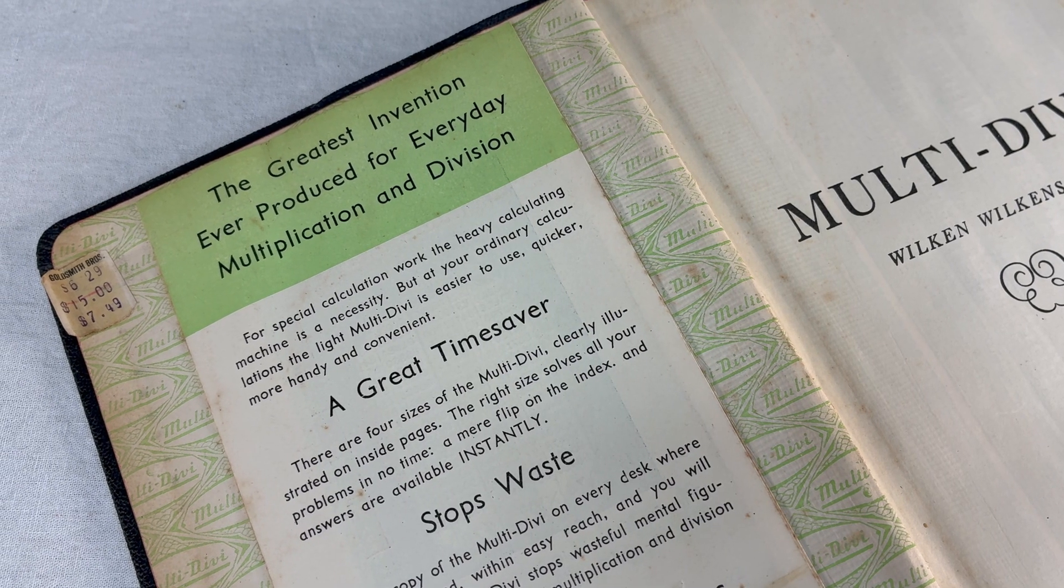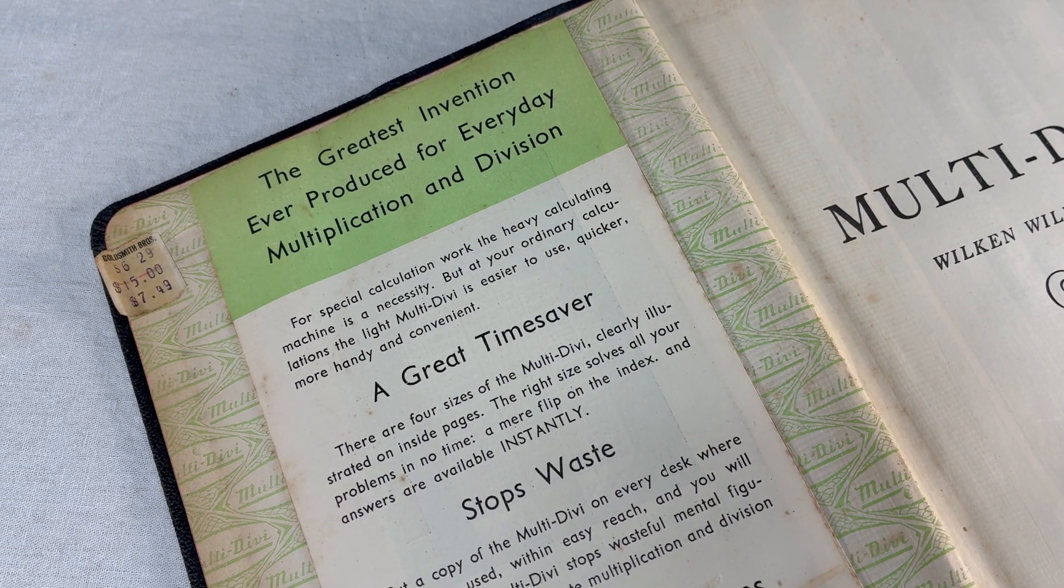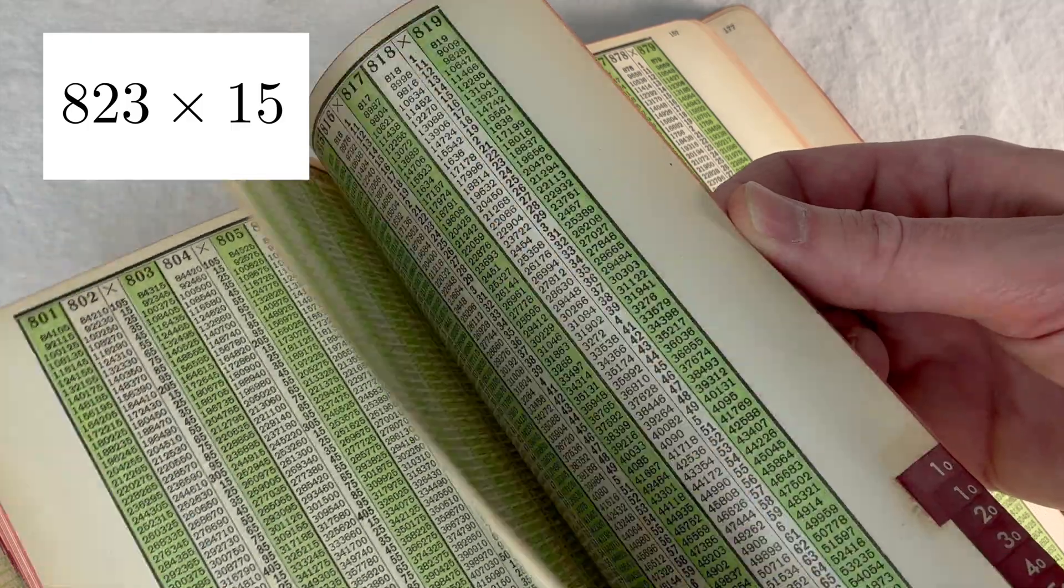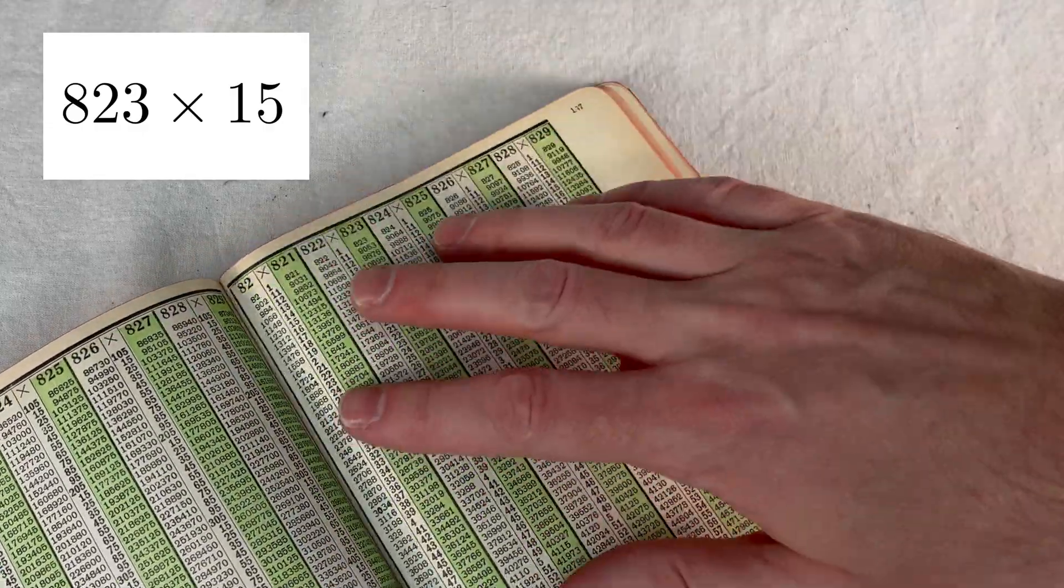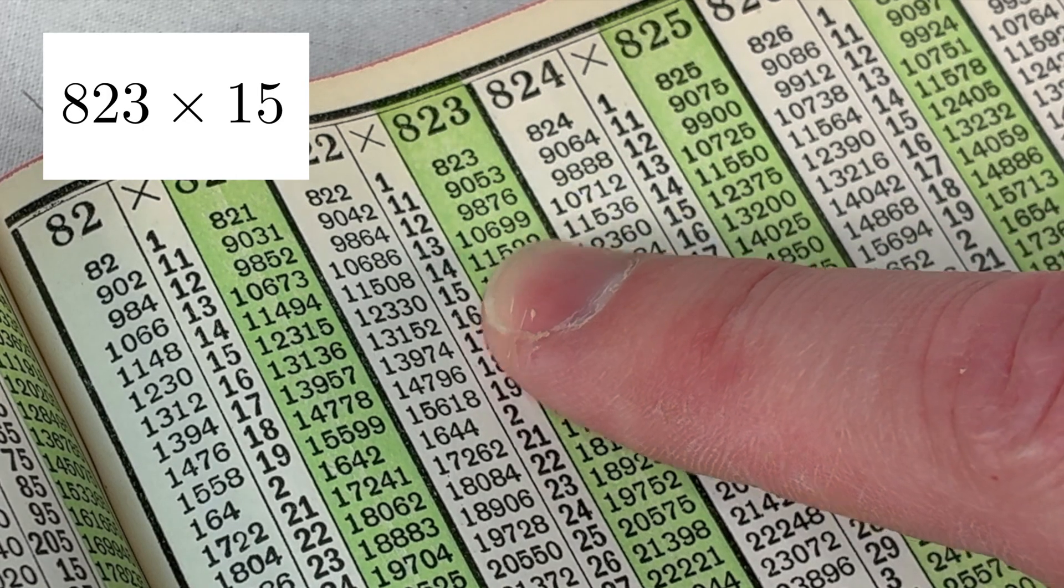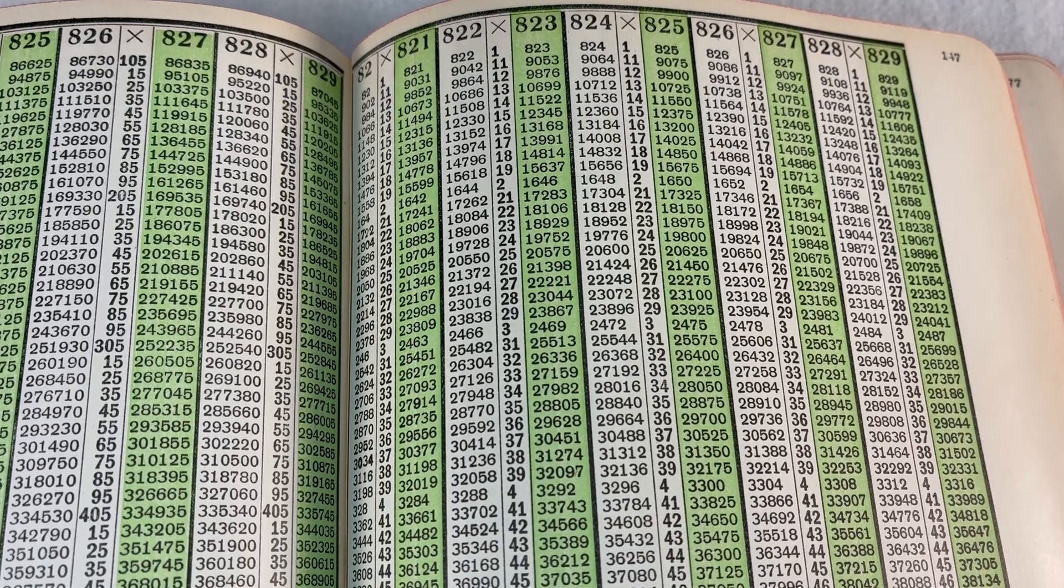Anyway, the Multi Divi includes all products of 3 digits times 2 digits. So, to find like 823 × 15, I turn to the page that has the big 823 on the top. And then you look down here, you got all the products. You look up 15, it's 1, 2, 3, 4, 5. Hey, that's the combination on my...